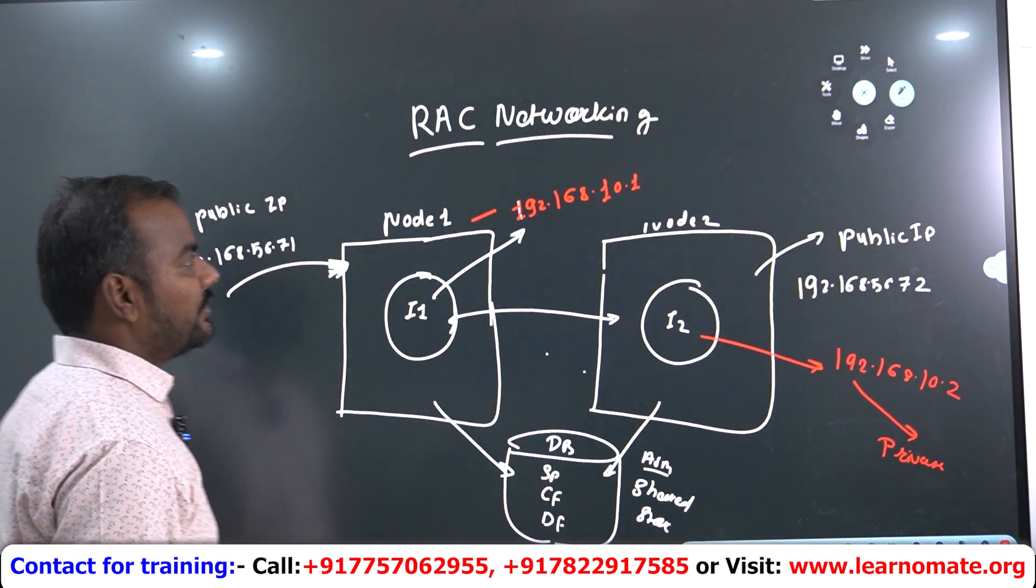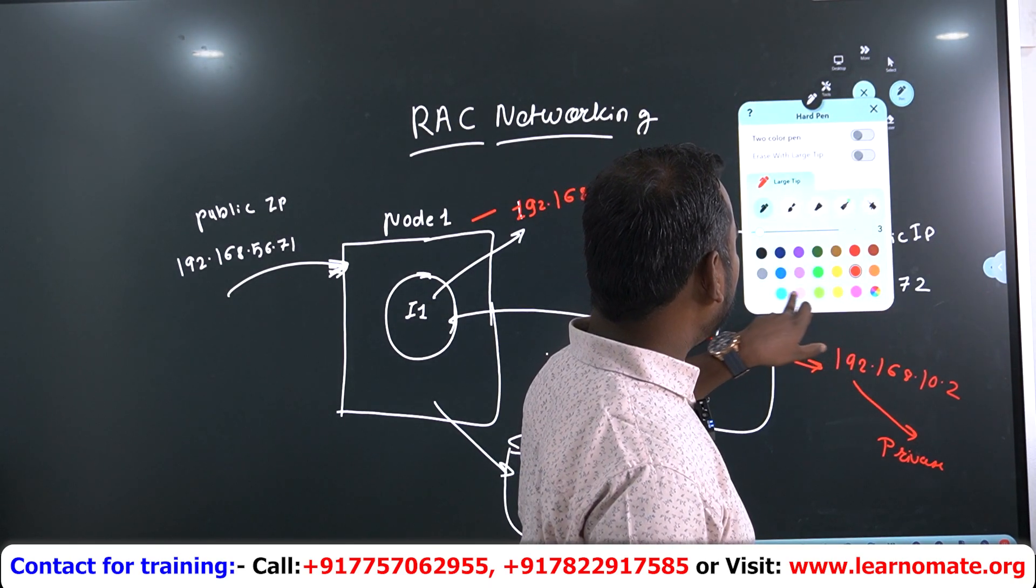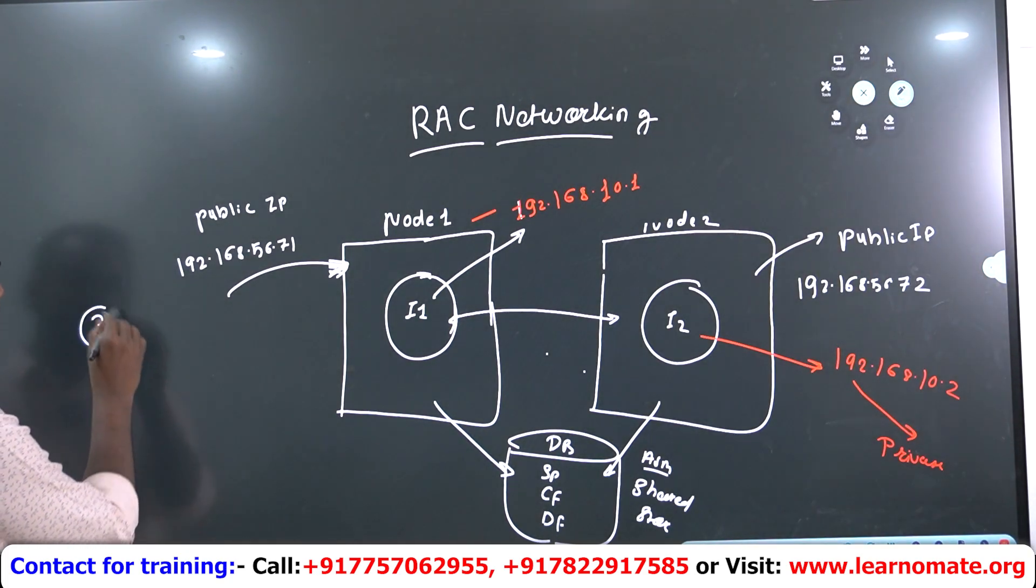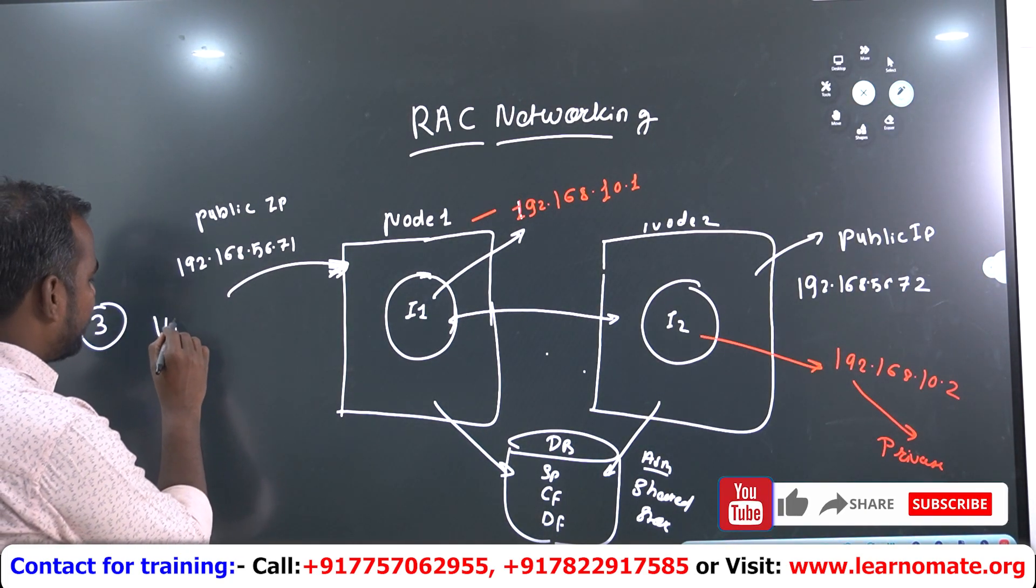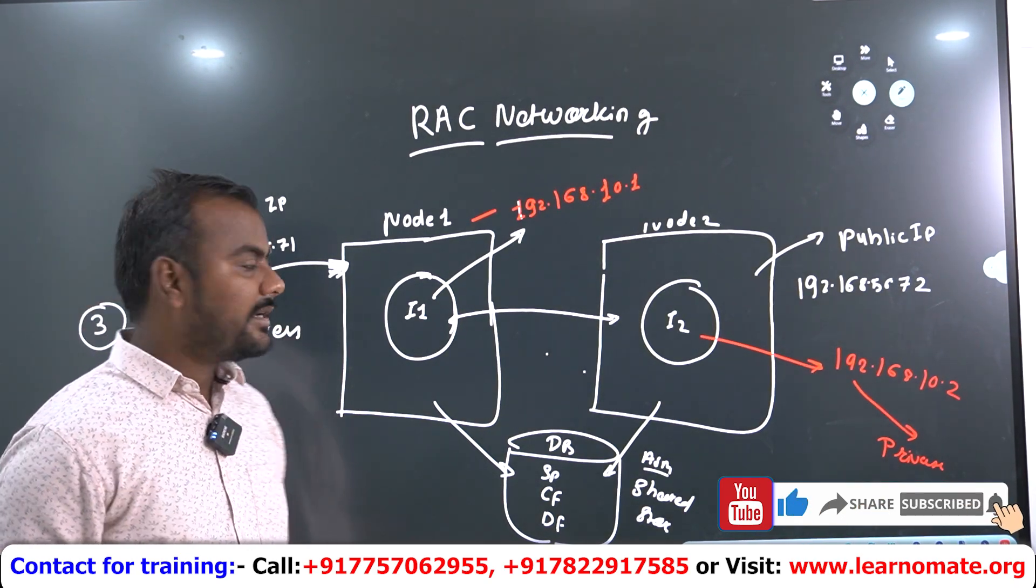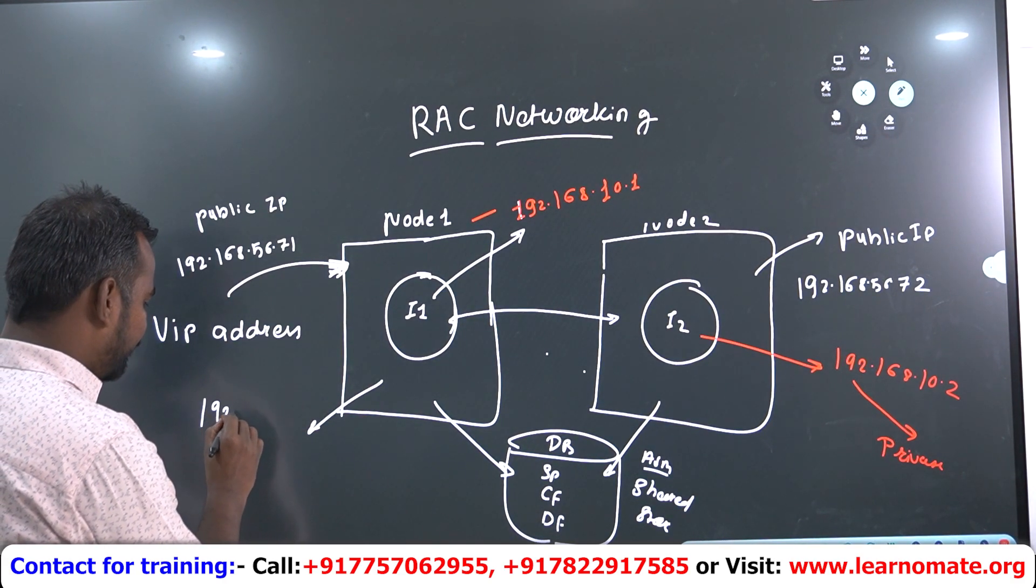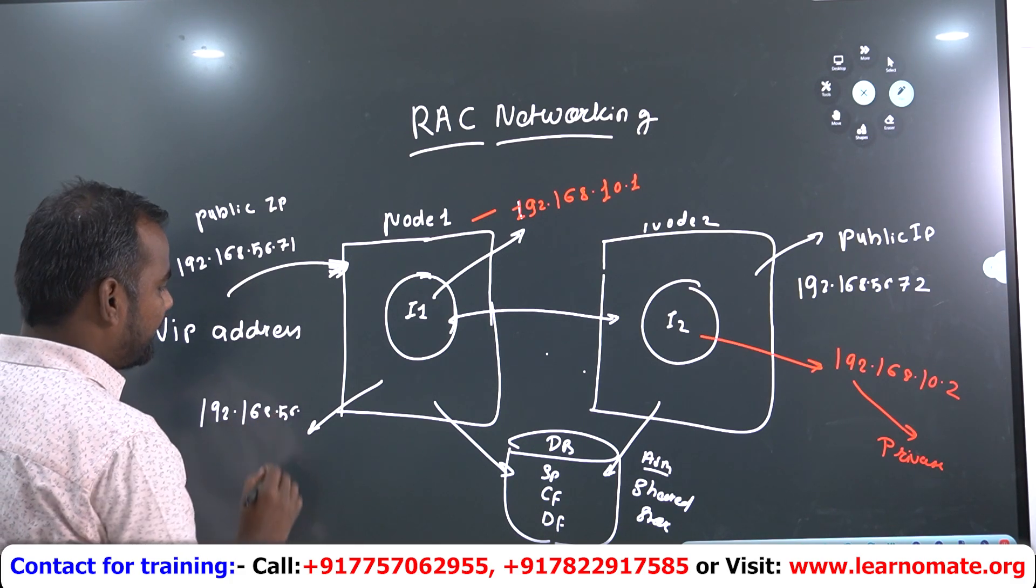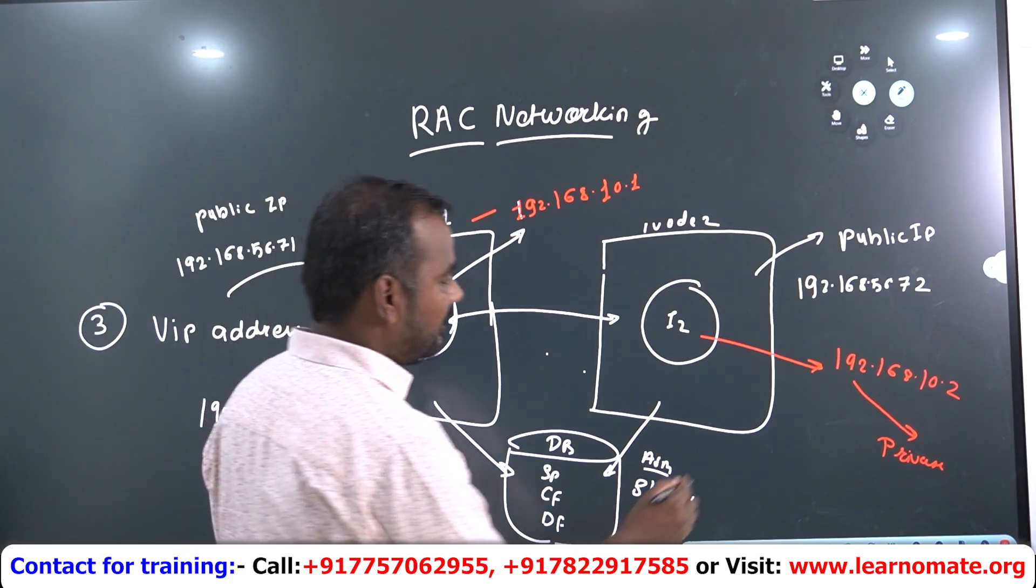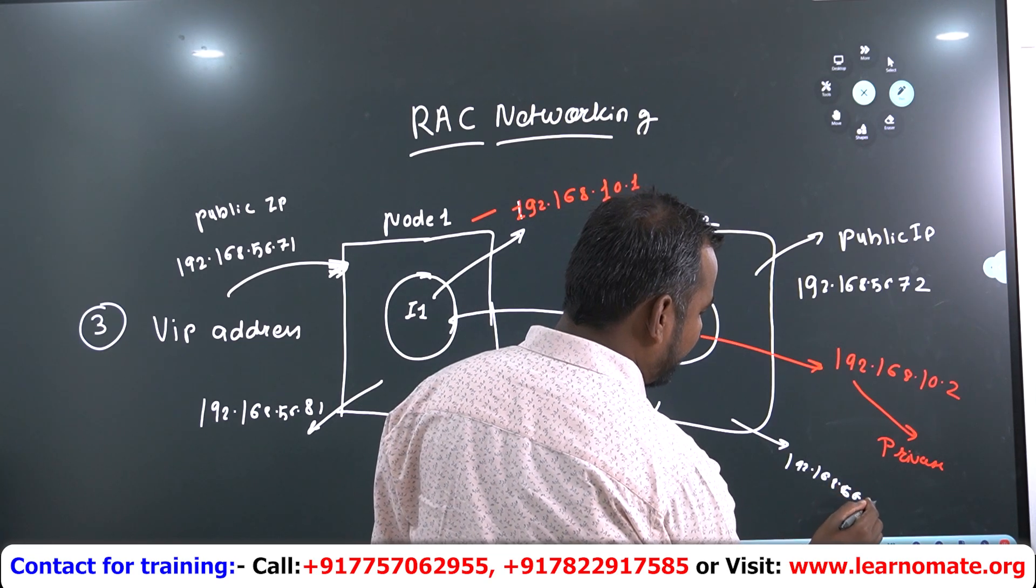Apart from this, we discussed about two, private and public. Apart from this, there is one more IP address. We call it as a VIP address. So VIP address will be like 192.168.56.81 for VIP. Here 192.168.56.82.